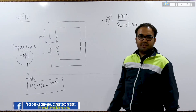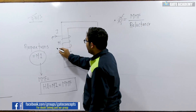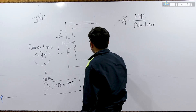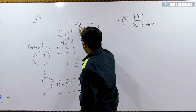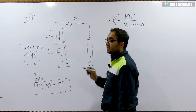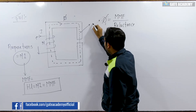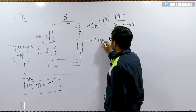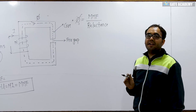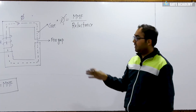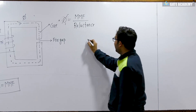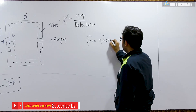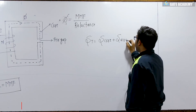I am going to use these basic terms. When we apply the number of turns and current here, the flux will flow through the core as well as the air gap. So for this flux there are two paths: the core and the air gap. Since there are two different materials connected in series, their resistances are added. Similarly, in the magnetic circuit, the total reluctance equals the reluctance of the core plus the reluctance of the air gap.